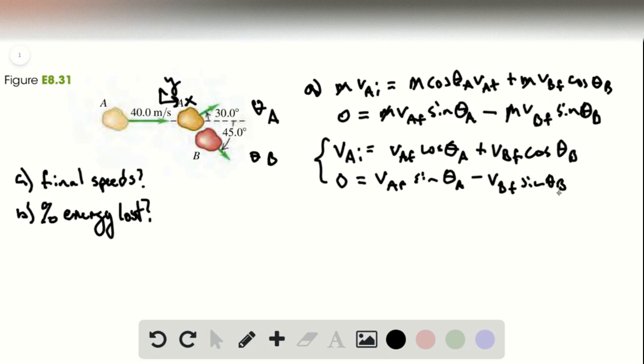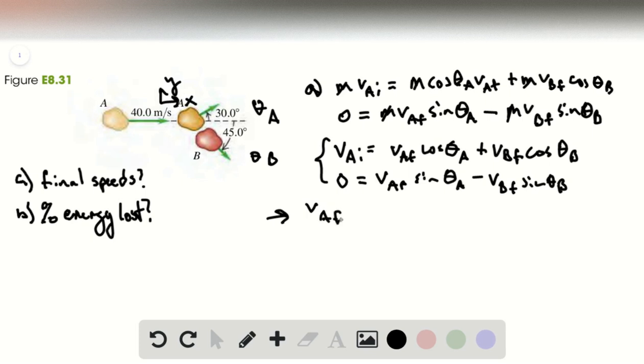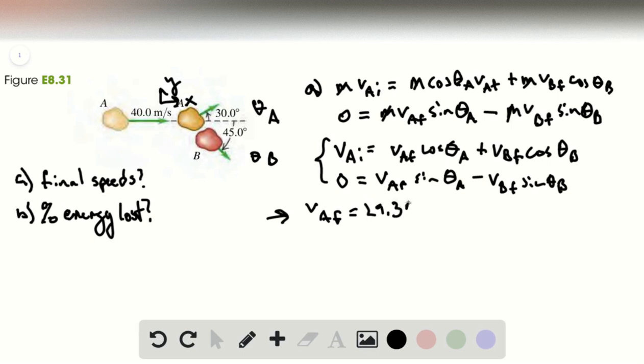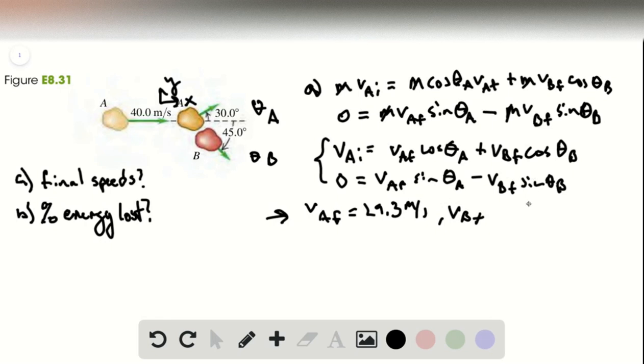And then plugging in the numbers, you find that the speed of A after the collision is 29.3 meters per second. And the speed of B after the collision is 20.7 meters per second.